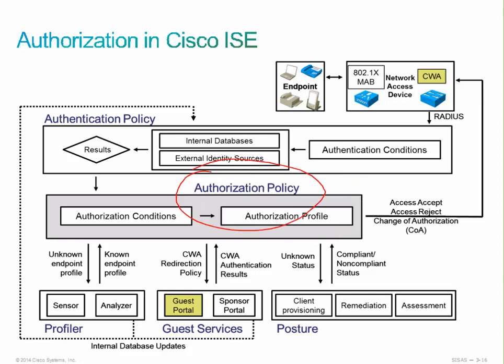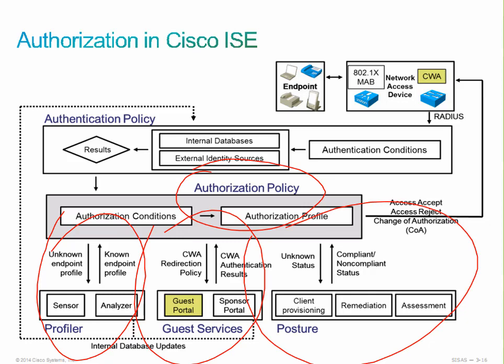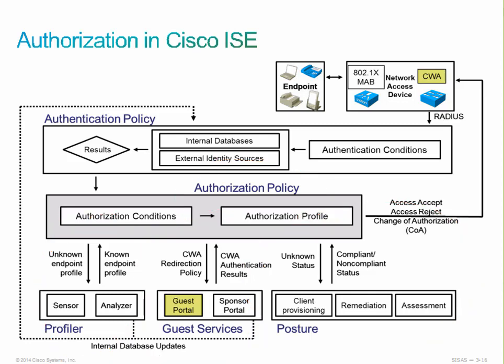From authorization, we can direct the component or device through a profiling engine, guest services engine, or posture engine for posture assessment. That could force the device to go back through the authentication process for a change of authorization once remediation is complete. These authorization policies contain all of these conditional requirements combined together to create the authorization check and return an authorization profile.